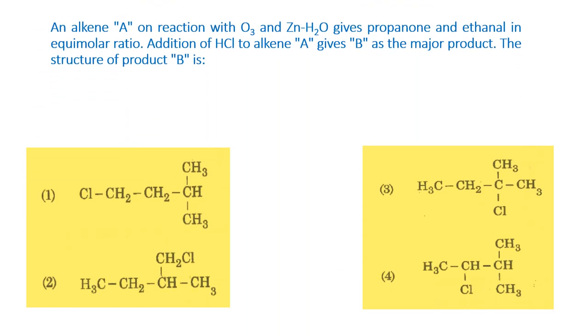Now let us go back to the question. In this question, an alkene is given and then the two products are given. One is propanone, the other is ethanal. Propanone is nothing but acetone and ethanal is nothing but acetaldehyde. Since it is said they are in equimolar quantities, definitely one acetaldehyde is going to interact with one propanone or acetone.